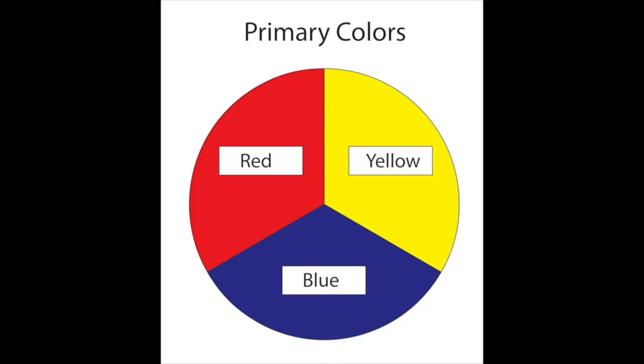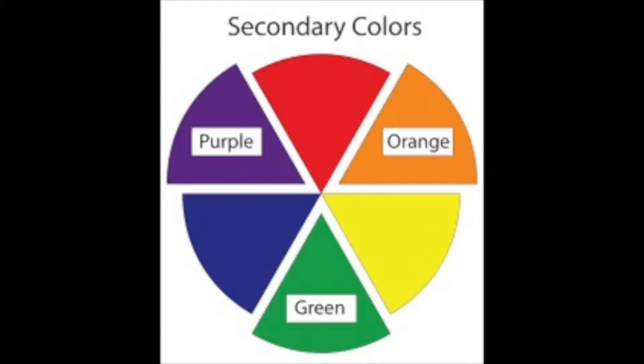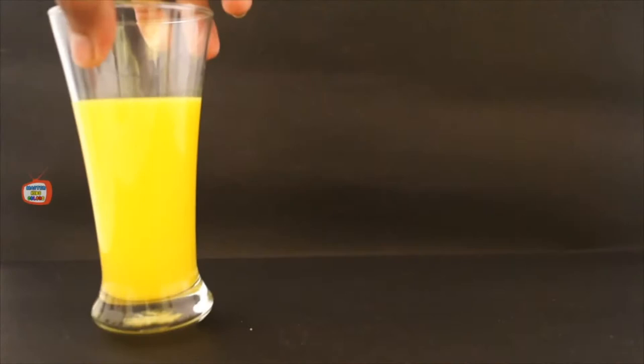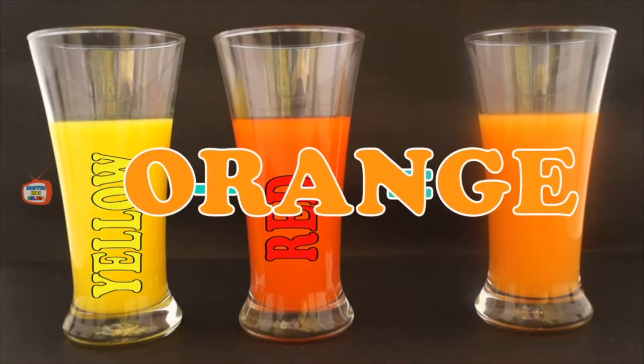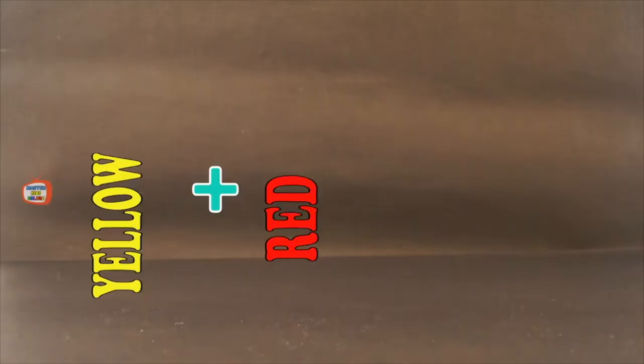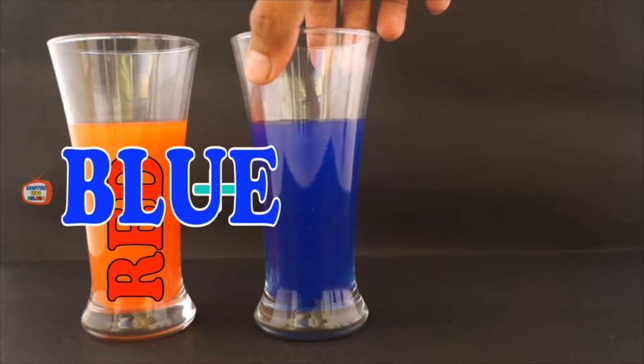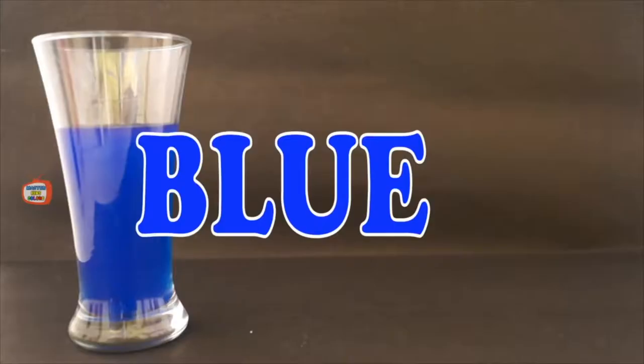The secondary colors are orange, purple, and green. Mixing two primary colors together creates secondary colors. Mixing yellow and red makes orange. Mixing red and blue creates purple. Combining blue and yellow creates green.